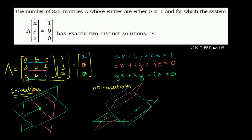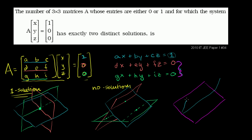The final circumstance is an infinite number of solutions. These two equations with zeros on the right-hand side could represent the same exact plane — both the magenta plane. Then the blue plane intersects that shared plane in a line, and any point along that intersection satisfies all three equations. So you would have infinite solutions.